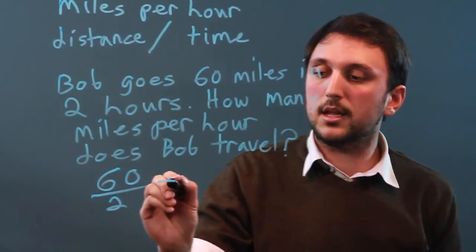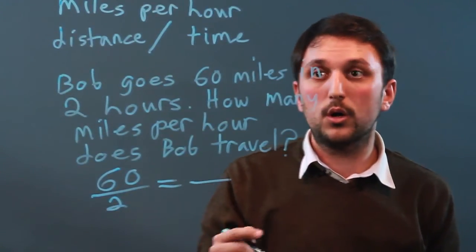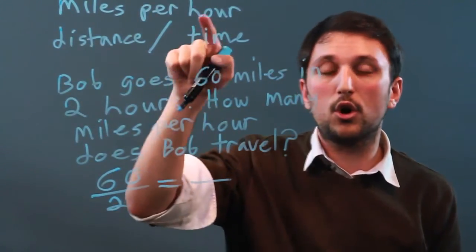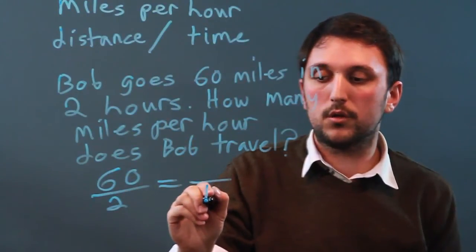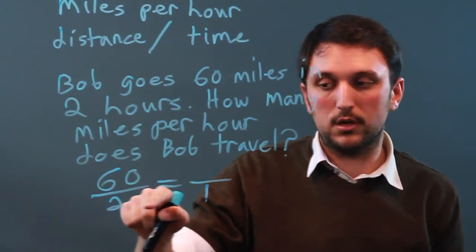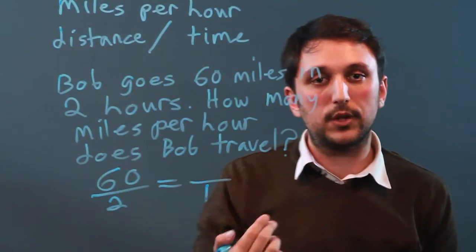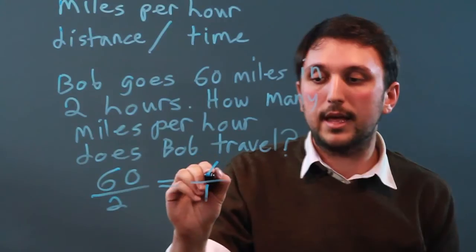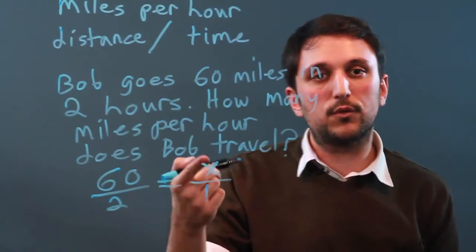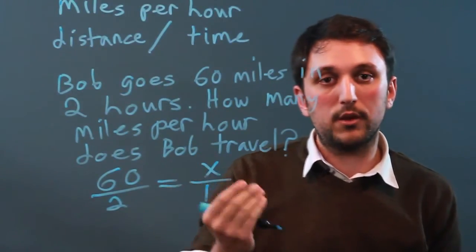And that is the same as, well, we want one hour because it's per one hour. So we put the one down here where the hours go. And we don't know how many miles he's traveled. So we're going to call that x. And that's how we introduce algebra into this equation, by variables.